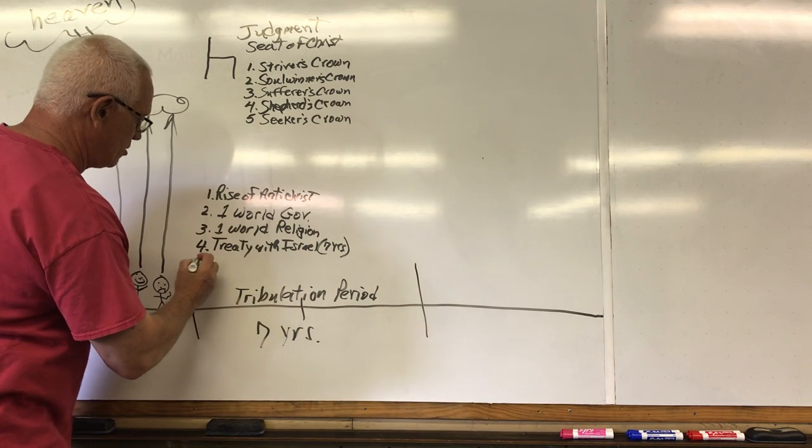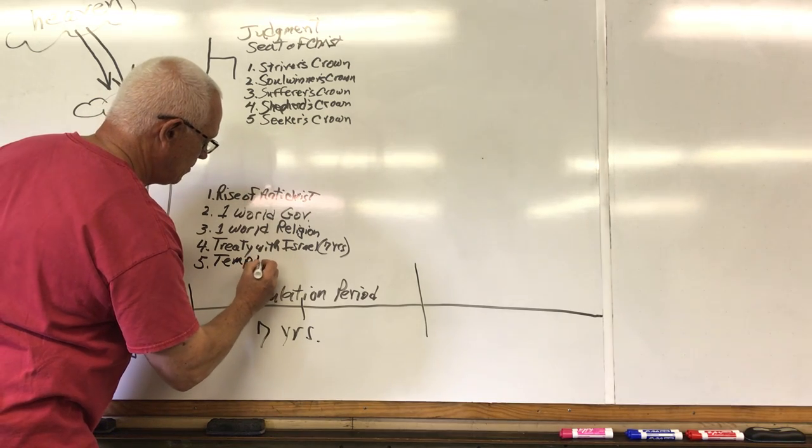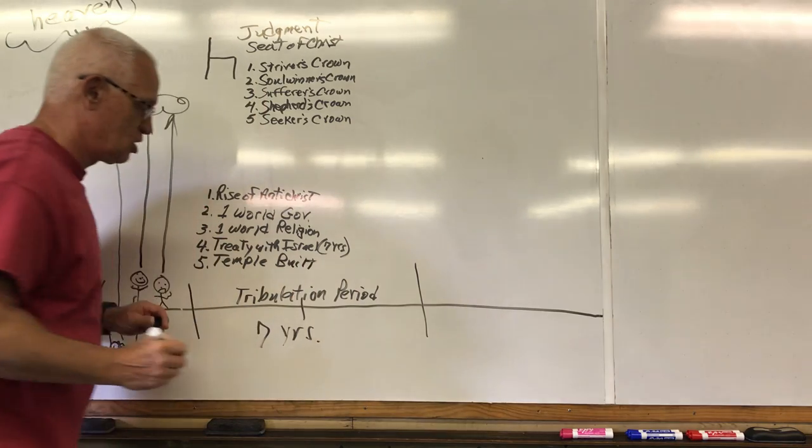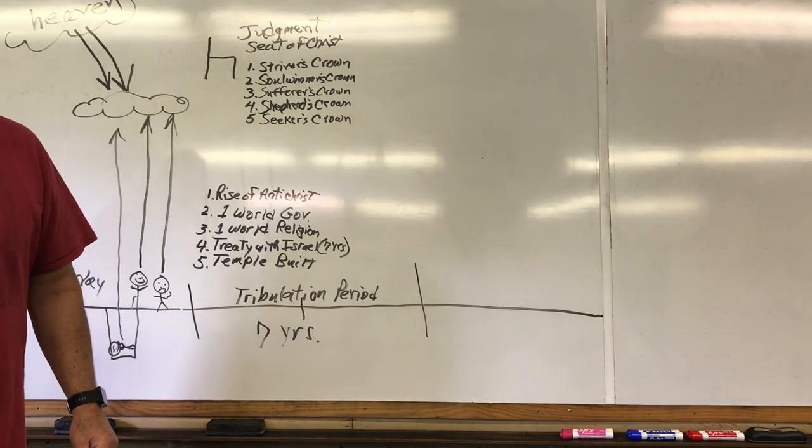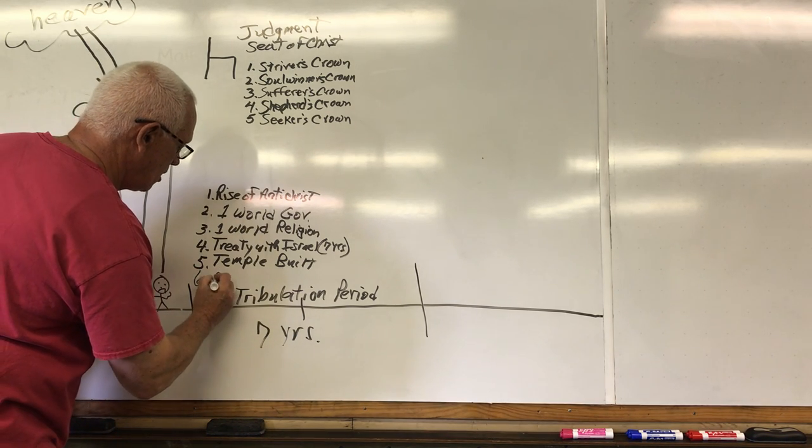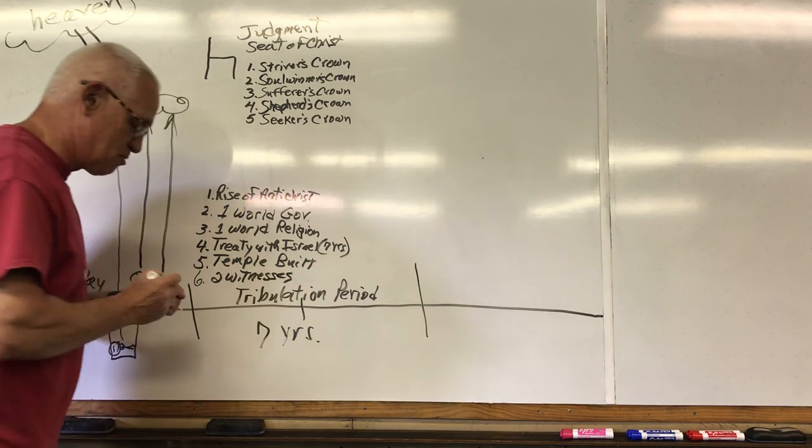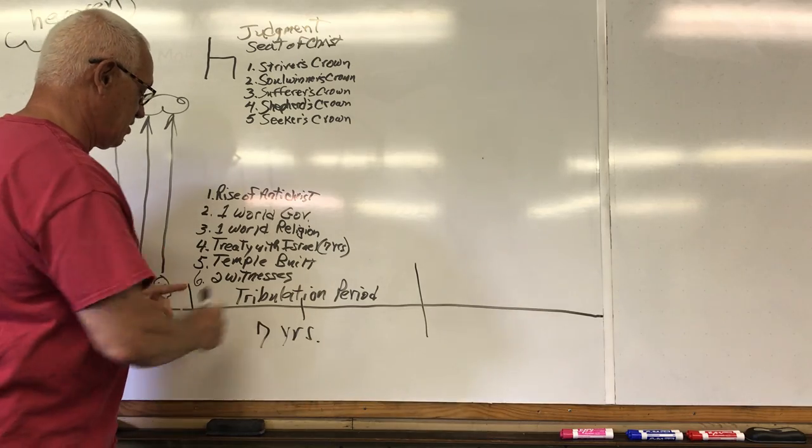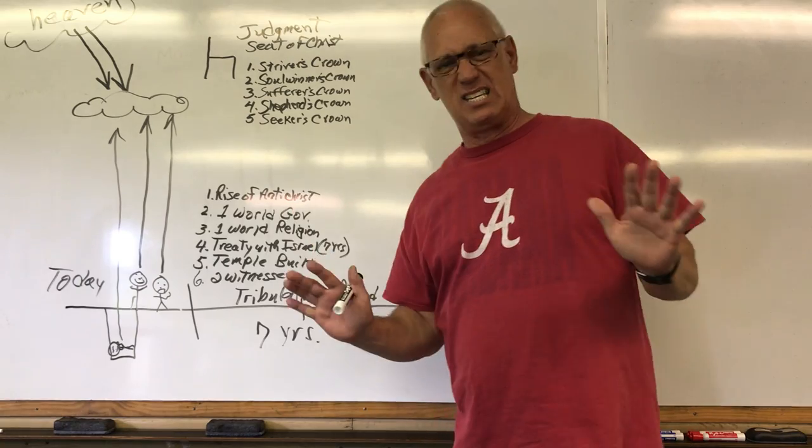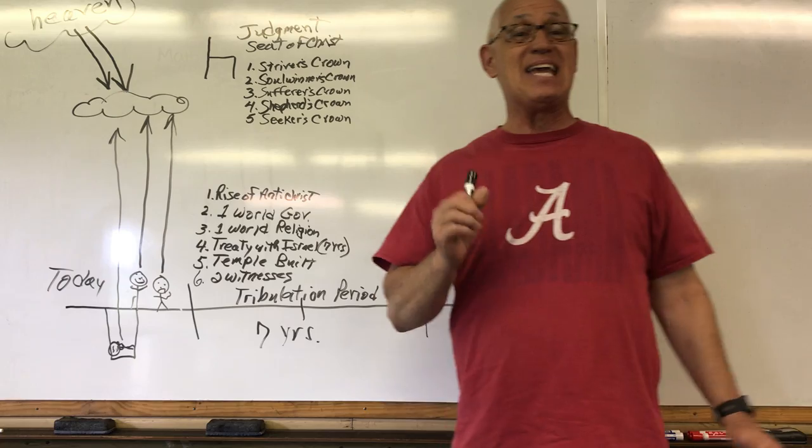Also during the first three and a half years, the temple in Jerusalem, Jewish temple will be built and sacrifices will be going on there. Also, there will be two witnesses. I'm kind of running through this real quick. And for the first three and a half years, there will be two Old Testament prophets, and they're called the two witnesses. And they will be preaching for the first three and a half years in Jerusalem.